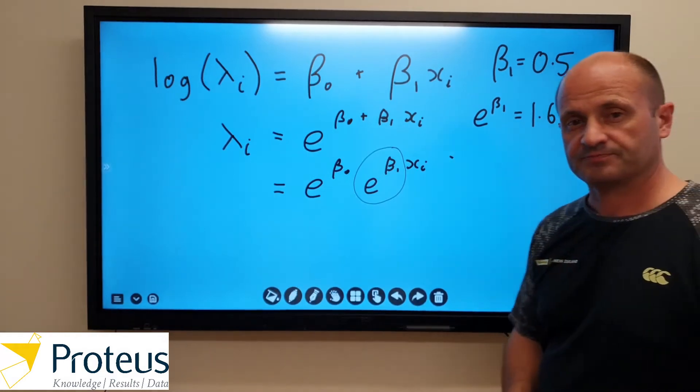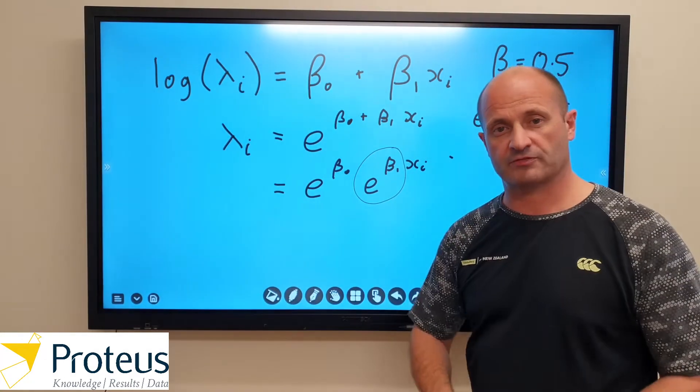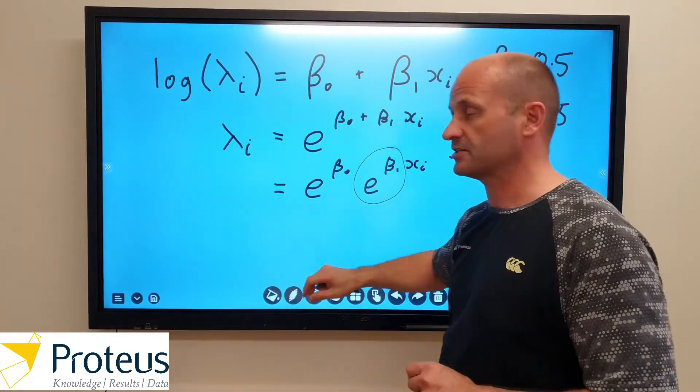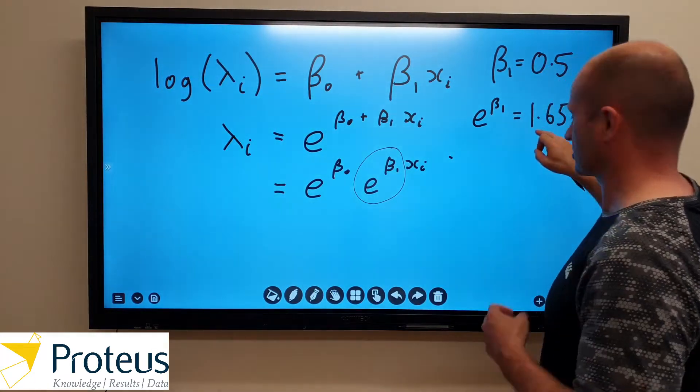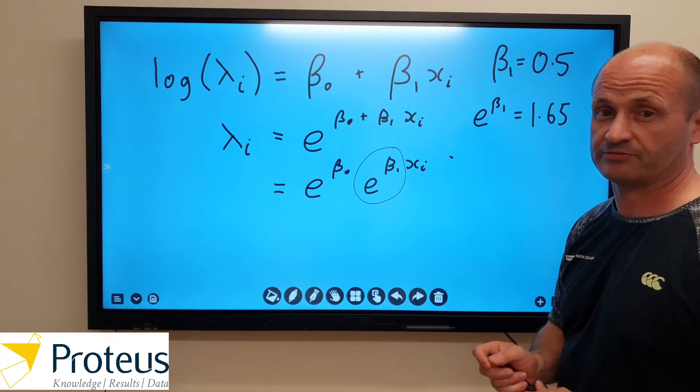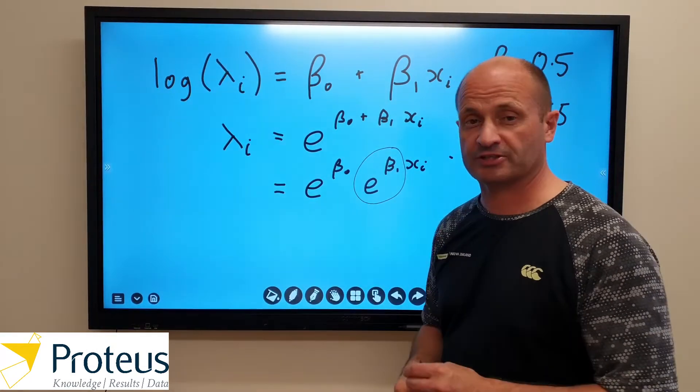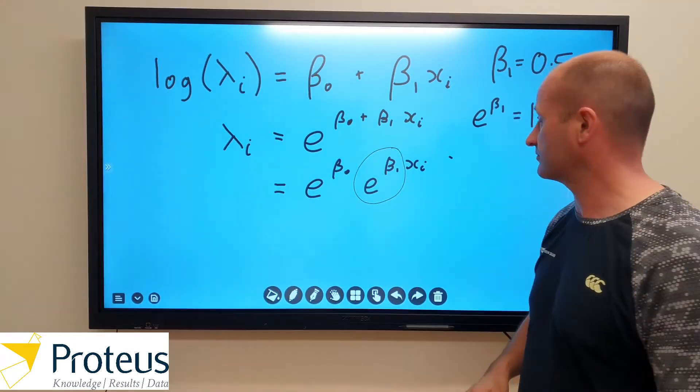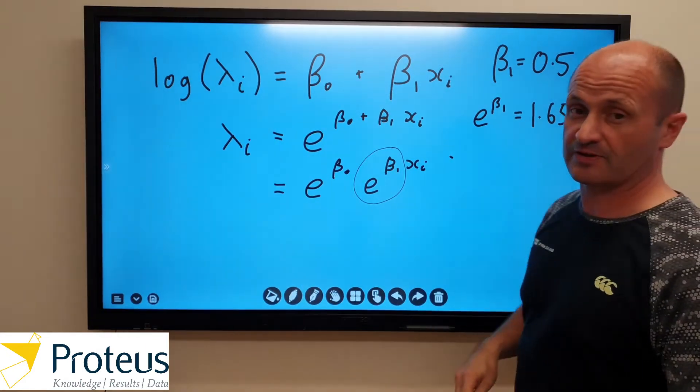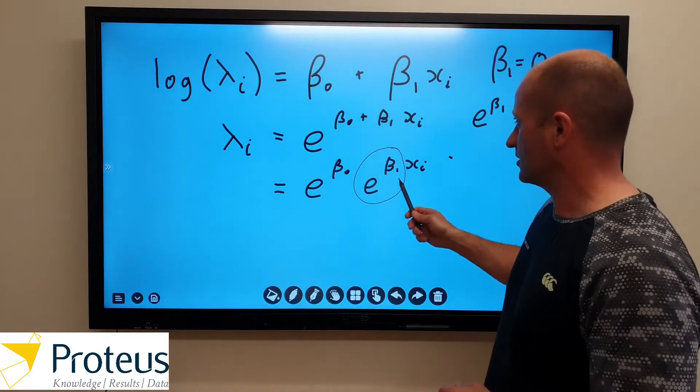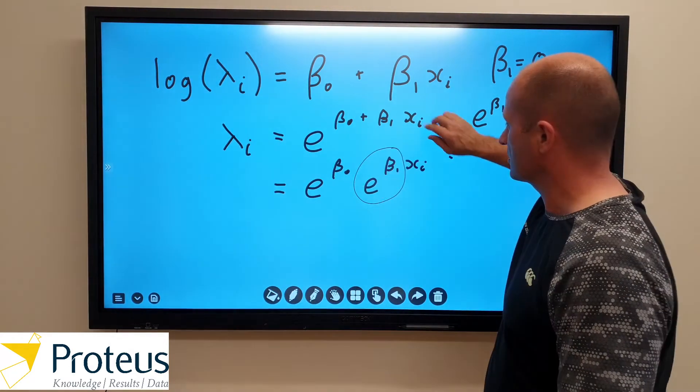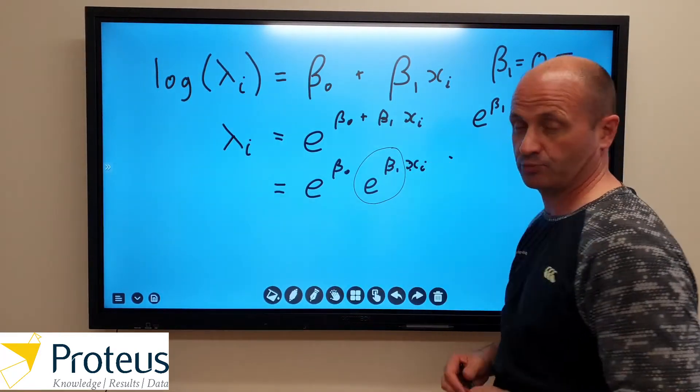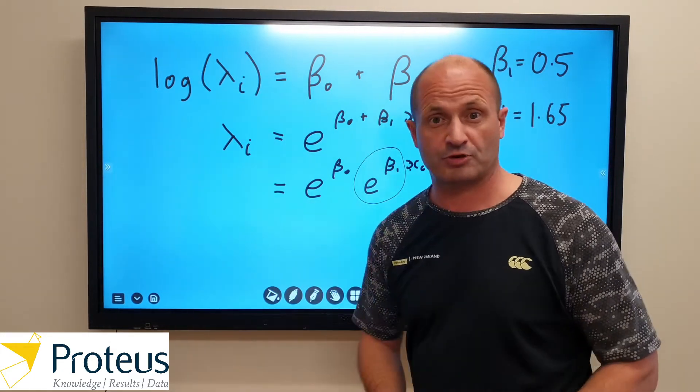So what that means is that for every one unit increase in that covariate x, our Poisson rate parameter is going to increase on a multiplicative scale, so it's going to increase by a factor of 1.65. So if our rate parameter is 2, then for every one unit increase in that covariate value, we're going to multiply that base value by 1.65. So where x is 0, that value might be 2. Where x is 1, that rate parameter will be 2 times 1.65, so it will be 3.3.